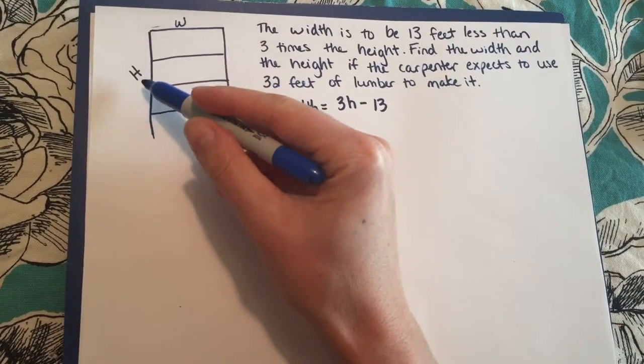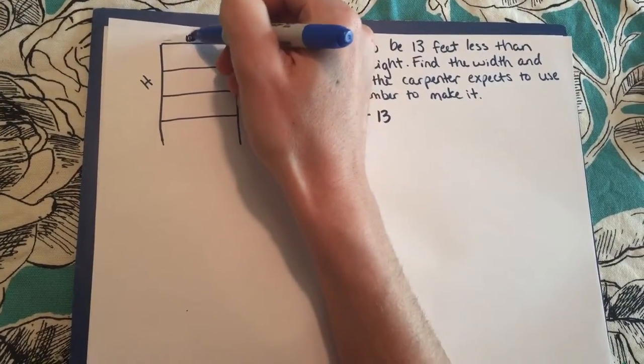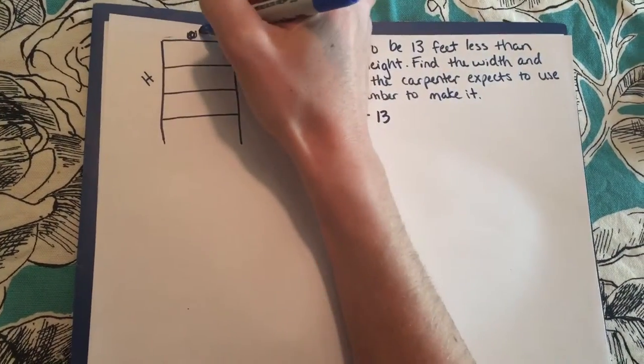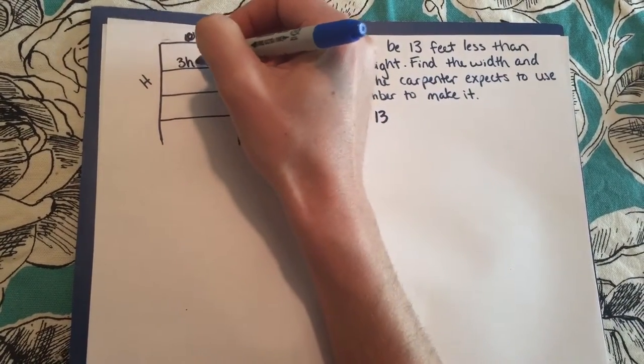So basically, if you think about it, I have an h here and h here and then instead of this being a w, it's going to be 3h minus 13 for all of the widths.